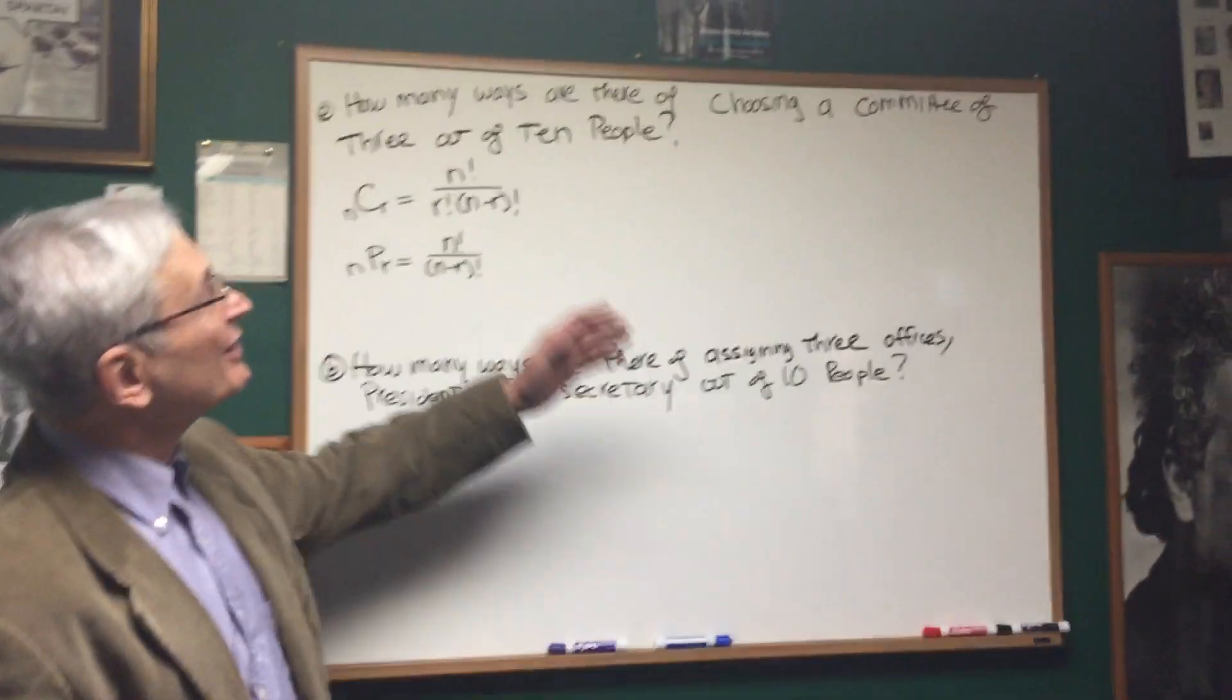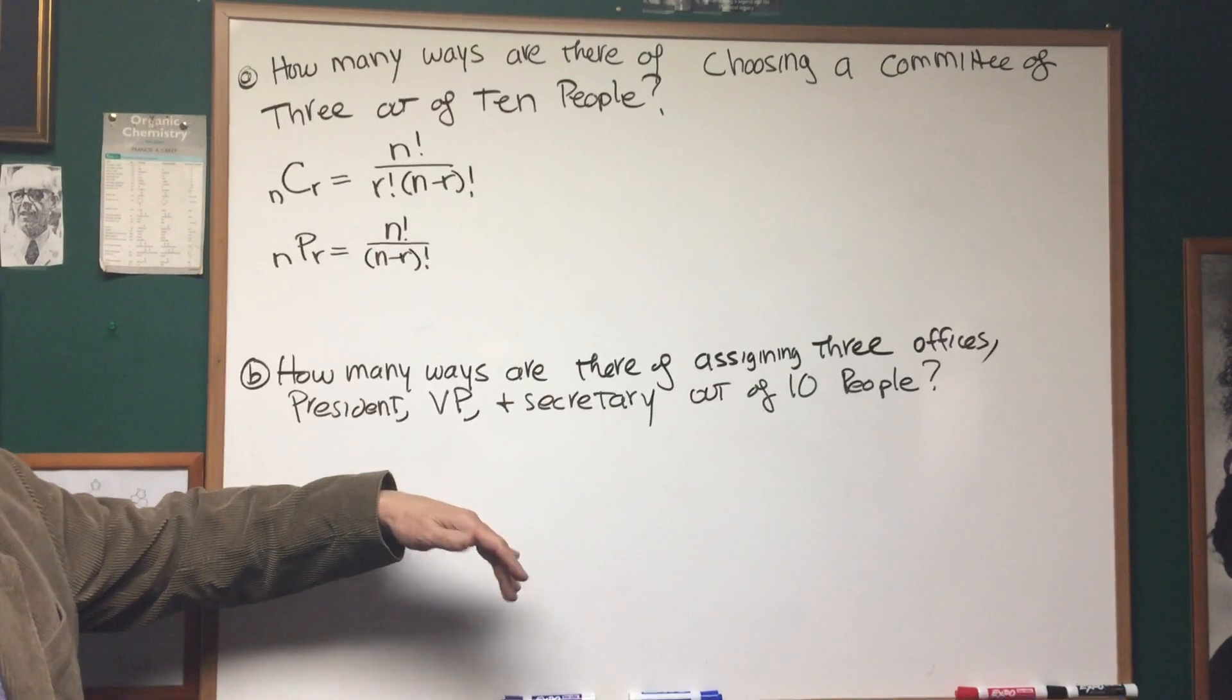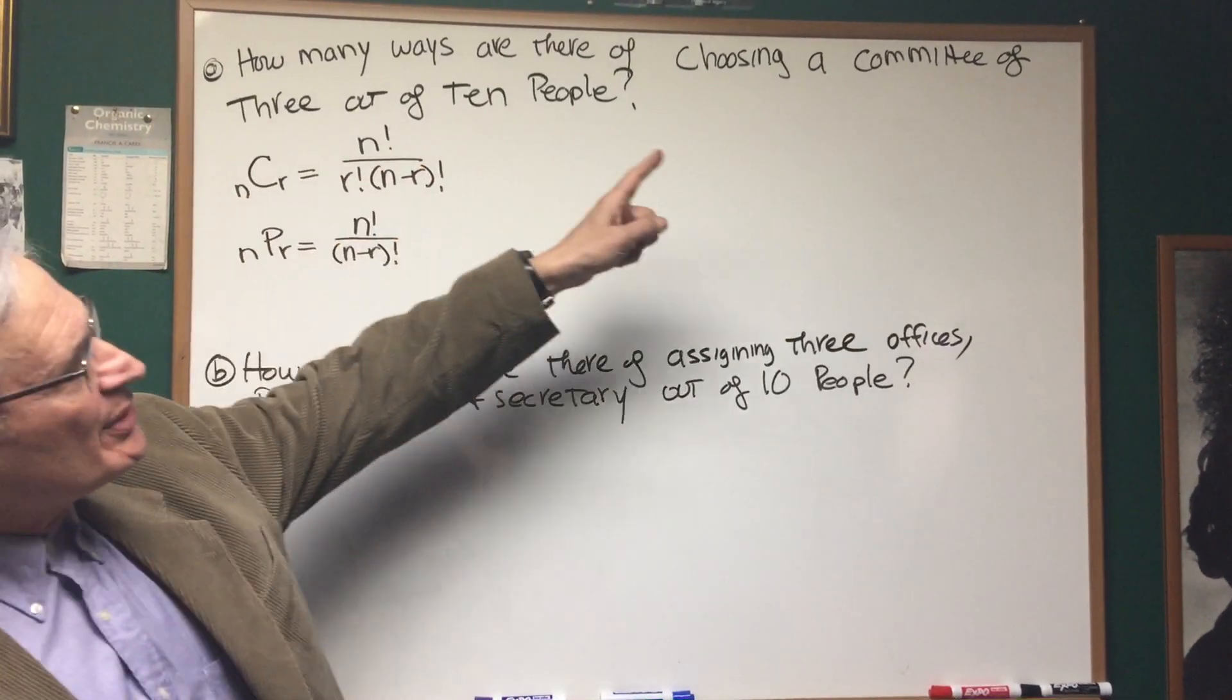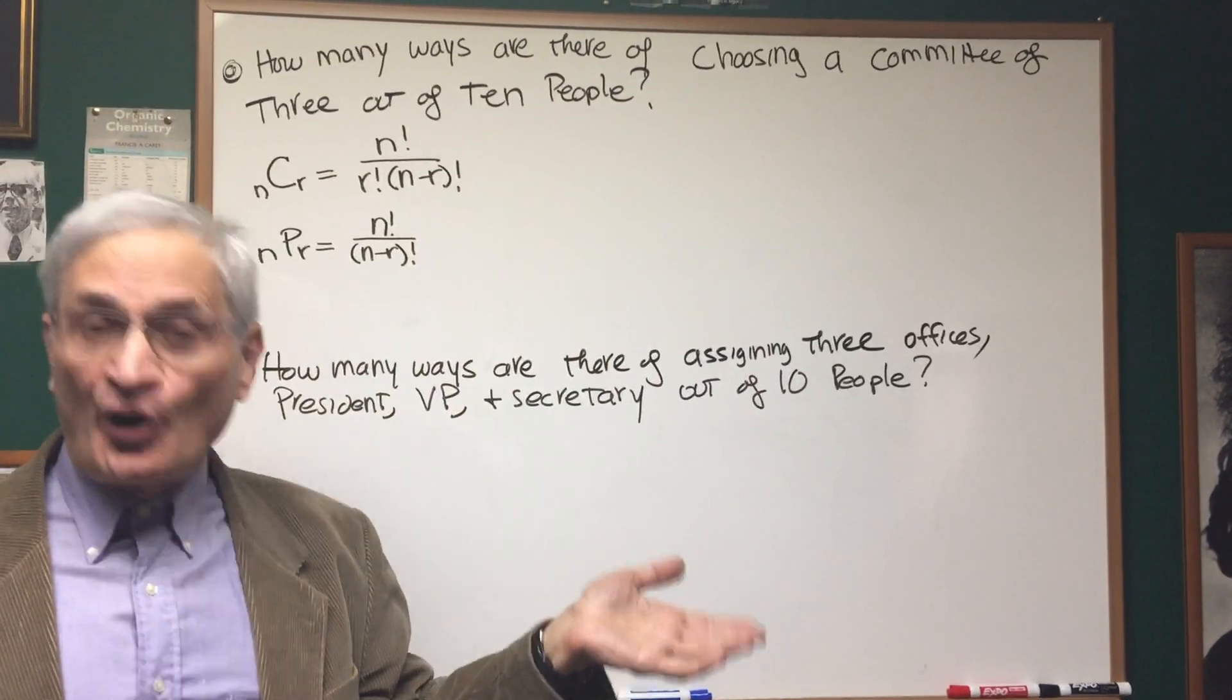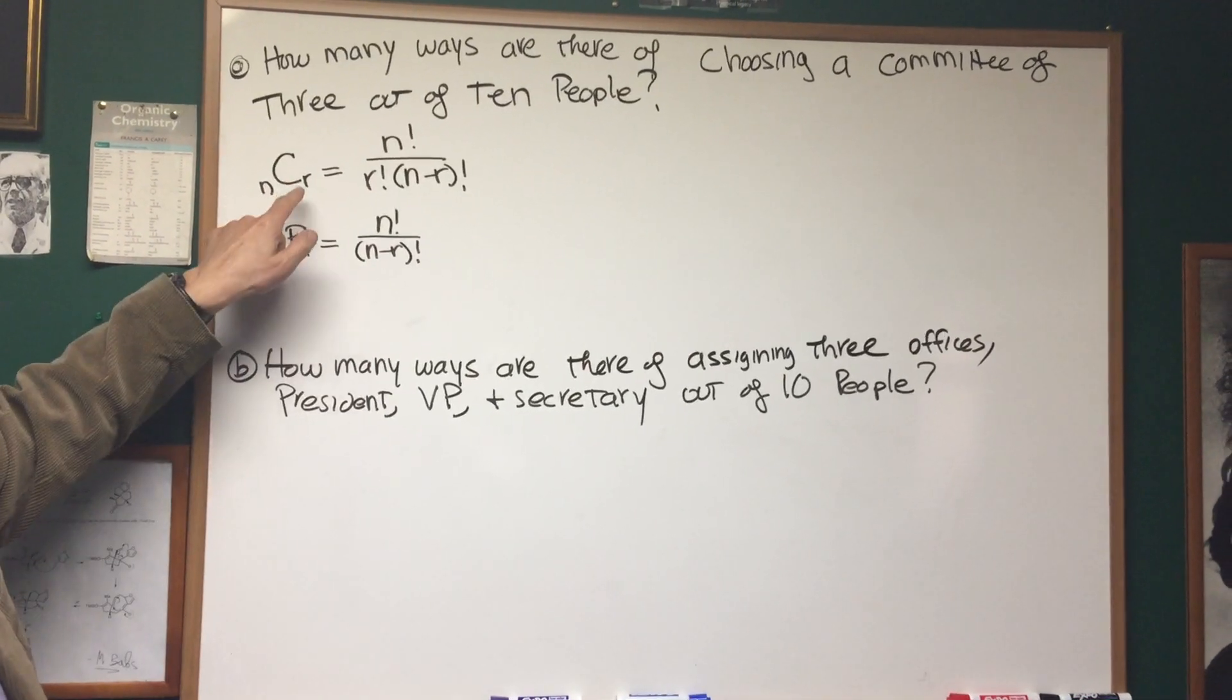Hi, Professor Blois here and we're going to be doing two problems, one involving permutation, the other involving combination. Now when we have a problem like this: how many ways are there of choosing a committee of three out of ten people? Order does not count.